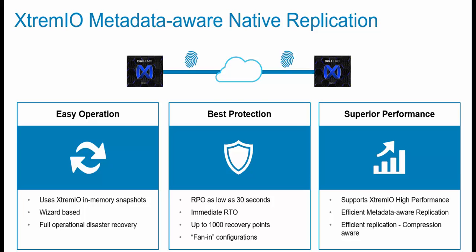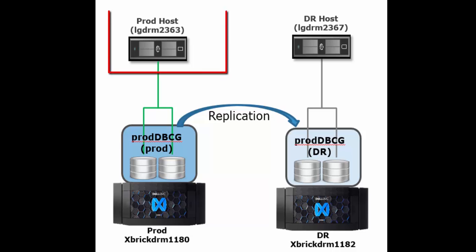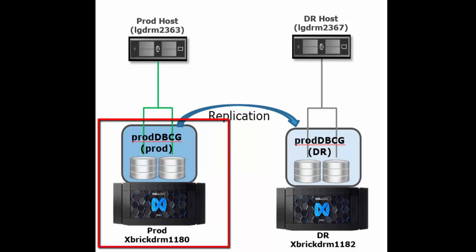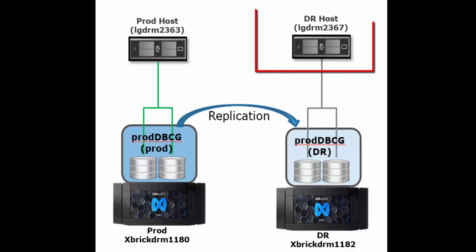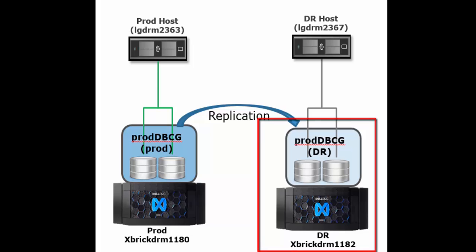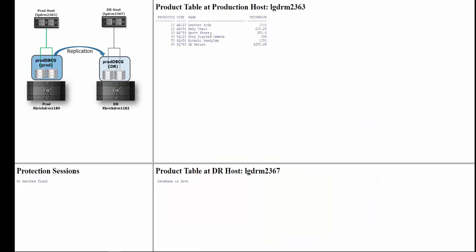Let's look at the environment for the demo. In the production site, we have host LGDRM2363 connected to XtremeIO X2 cluster XBIGDRM1180. The production host runs an application using Oracle Database. We are going to replicate the Oracle Database to the DR site. In the DR site, we have host LGDRM2367 connected to XtremeIO X2 cluster XBIGDRM1182. I have created a web page that receives information from the hosts and clusters, refreshing itself every 30 seconds.